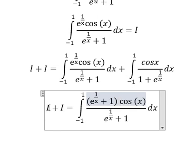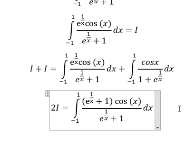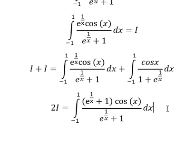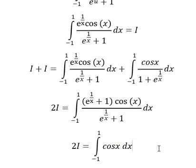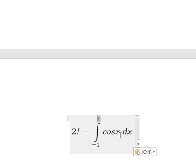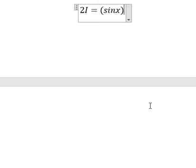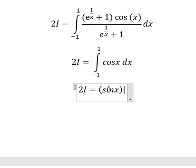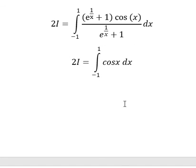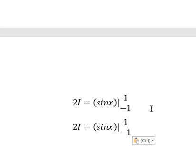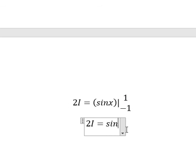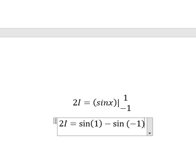This gives us 2I, so we simplify these fractions and have cosine x. The integration of cosine x is sine x, and we evaluate the bounds from negative one to positive one. This equals sine of one minus sine of negative one.